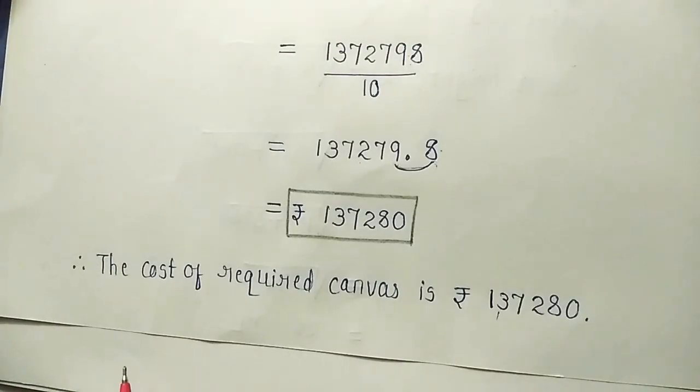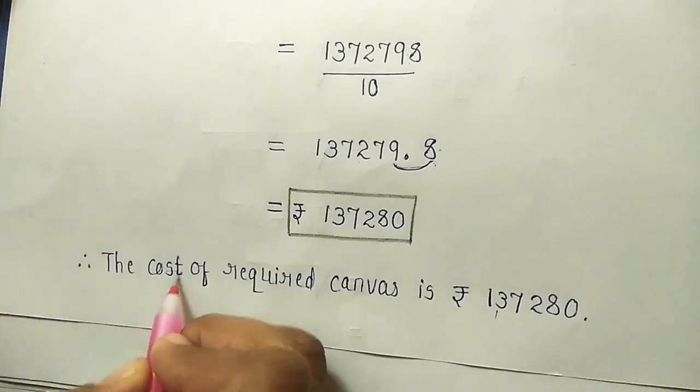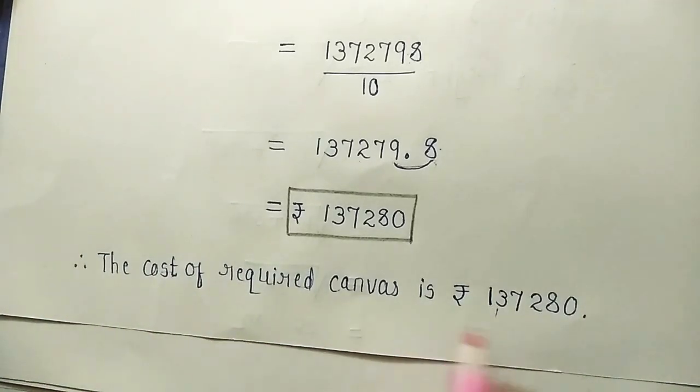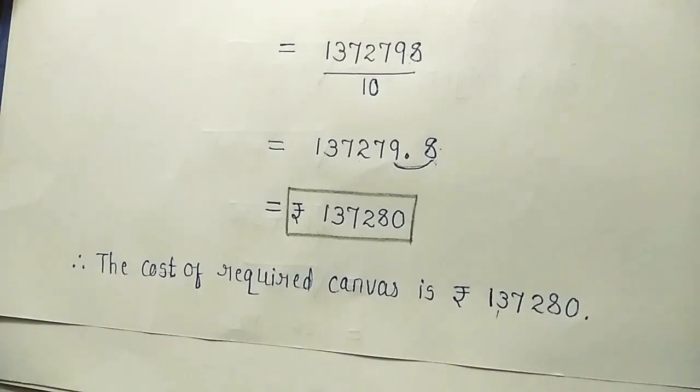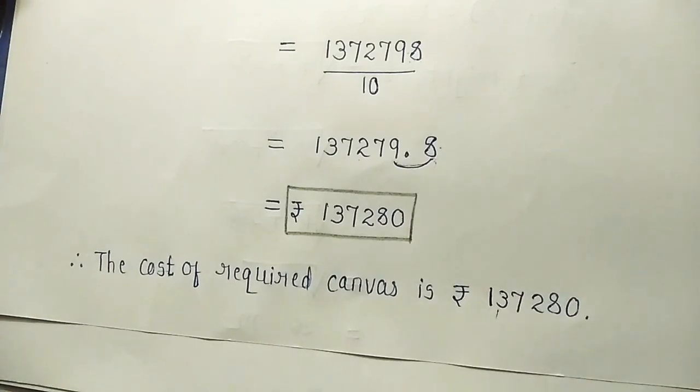Answer in sentence we'll write. Therefore, the cost of required canvas is rupees 137280. So this is question number 3.